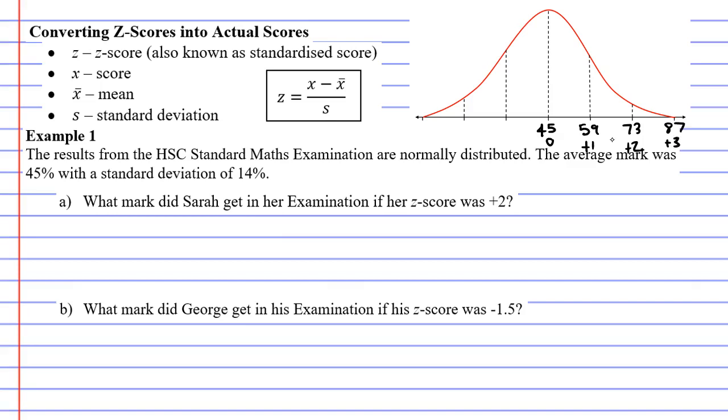As we move to the left we're going to subtract our standard deviation of 14% each time. So 45 minus 14 is 31, that's a z-score of negative 1. 31 minus 14 is 17, that's a z-score of negative 2. And 17 minus 14 is 3, that's a z-score of negative 3. Now I've just realized I should have written the percentage symbol next to all of these numbers.